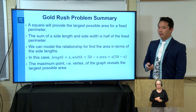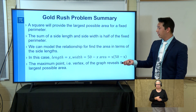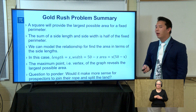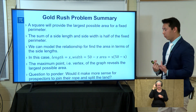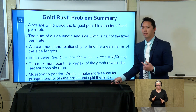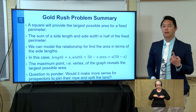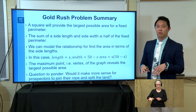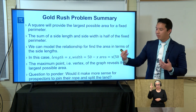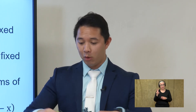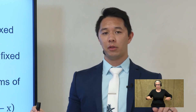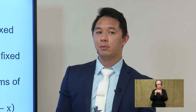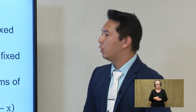Something to think about after we're wrapped up: would it make sense for prospectors to come together and join their rope and then split the land? We know one prospector with 100 meters has a maximum land area potential of 625 square meters. But what happens when two prospectors join their rope — now they've got 200 meters — would each end up with more area? That's something I want you thinking about.